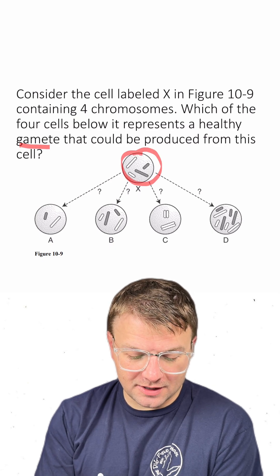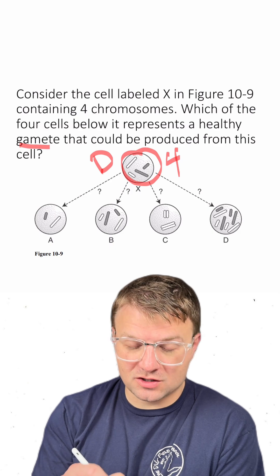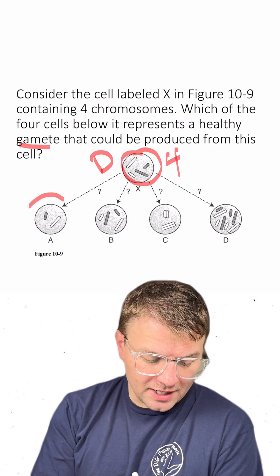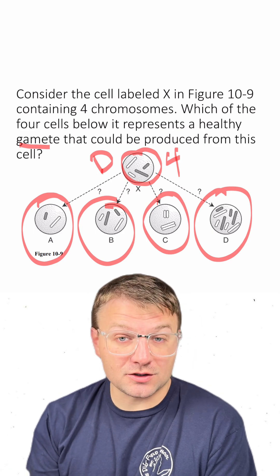So here's our cell labeled X. It has four chromosomes. This cell is known as a diploid cell since we're starting off cell division. Looking at our answers, we have four possibilities of cells that contain these chromosomes.